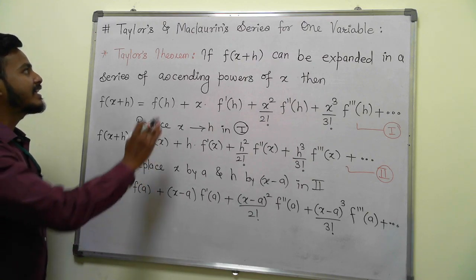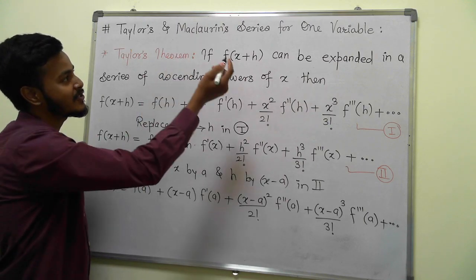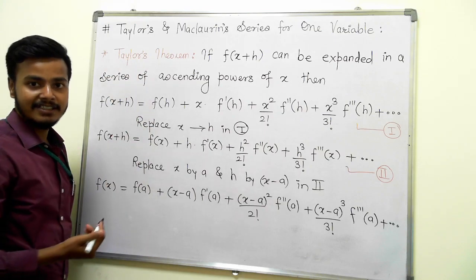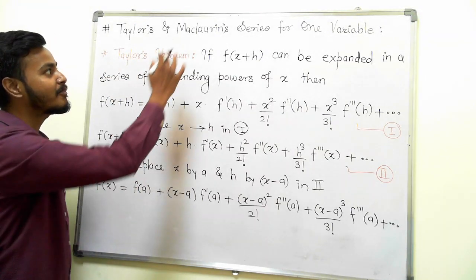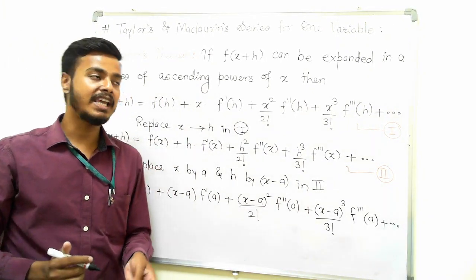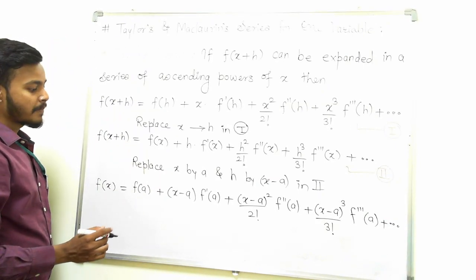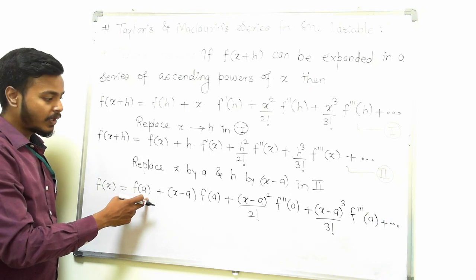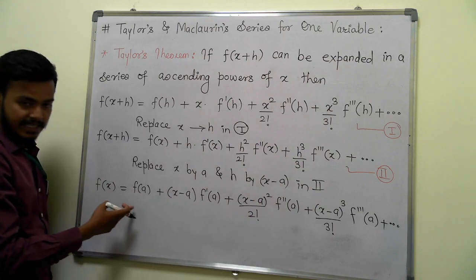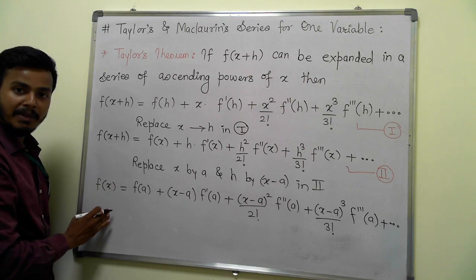Now you will be wondering, I have given the name of the topic as Taylor's and Maclaurin series for function of one variable and we are talking again and again about Taylor's series or Taylor's theorem, why not Maclaurin? So Maclaurin series is nothing but a special case of Taylor's series. The moment you substitute a equals 0 in this Taylor's series expansion, you would get the Maclaurin series.